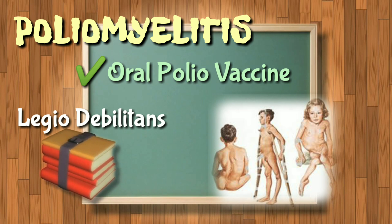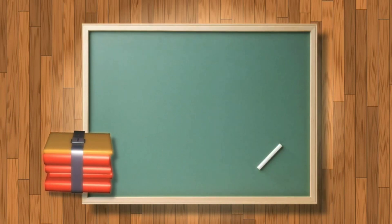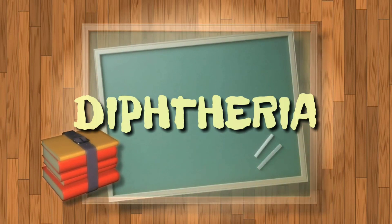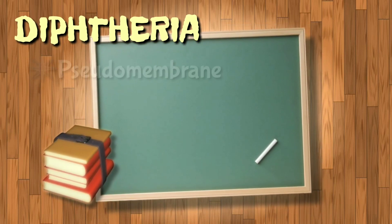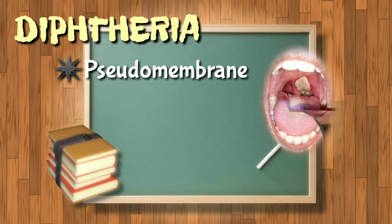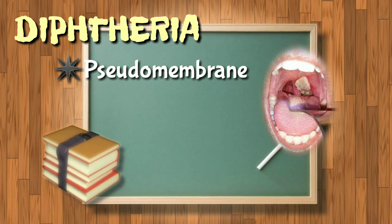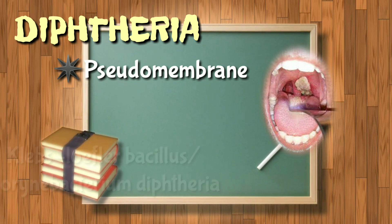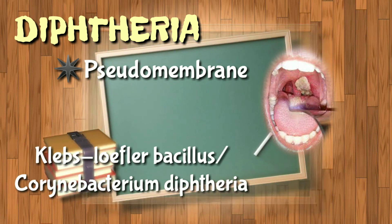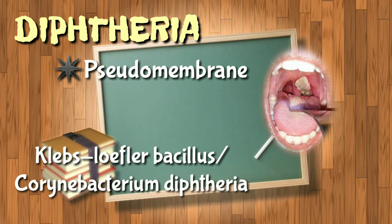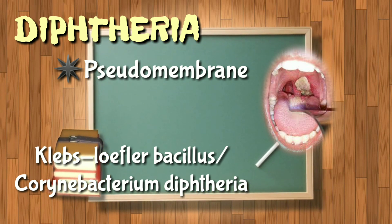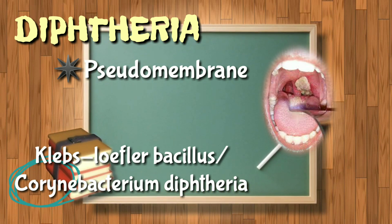Another is diphtheria, with its pathognomonic sign the pseudomembrane, and its causative agent the Klebs-Loeffler bacillus, also known as Corynebacterium diphtheriae. To make it easier: diphtheria is for Klebs and Coryne.